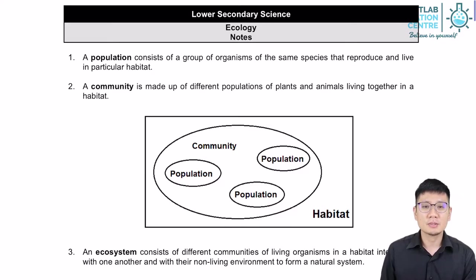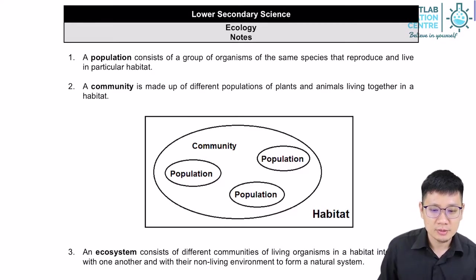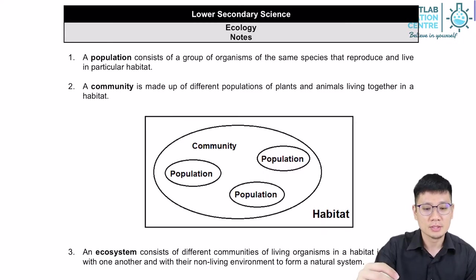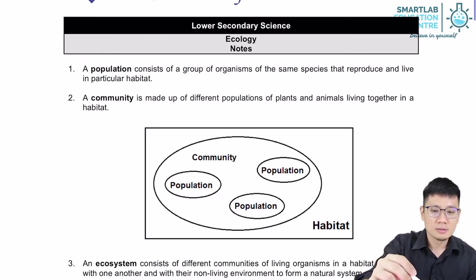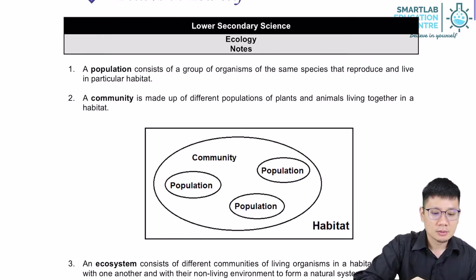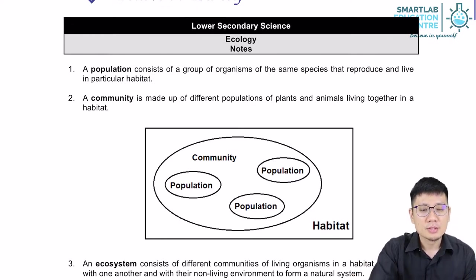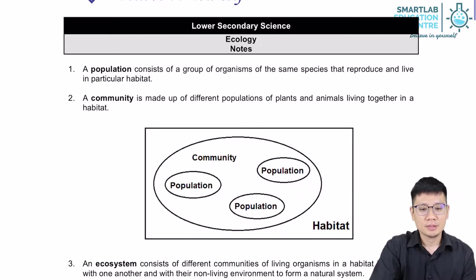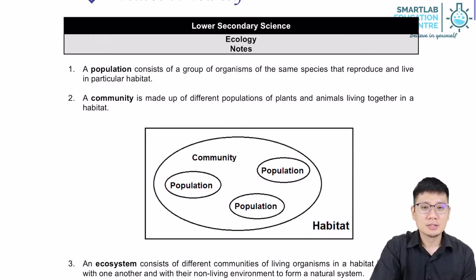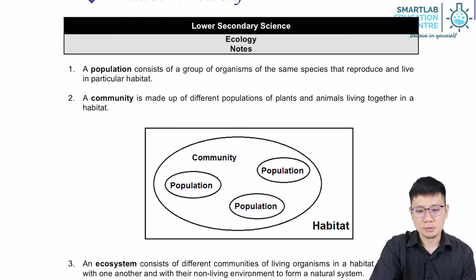We're going to be introducing a few words in this study of ecology. First, we're going to start with population. A population consists of a group of organisms of the same species. For example, a population of humans in a city, or maybe a population of ants in a tree or a garden. Population can be of any living thing, plants or animals included.